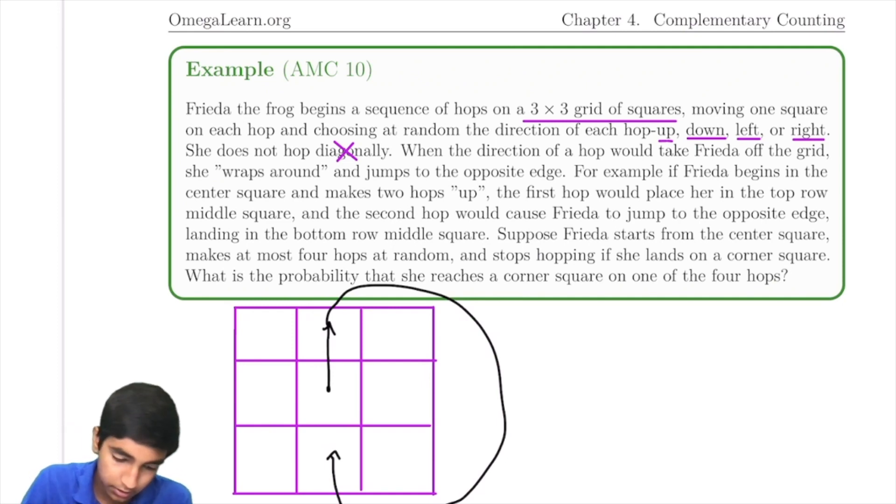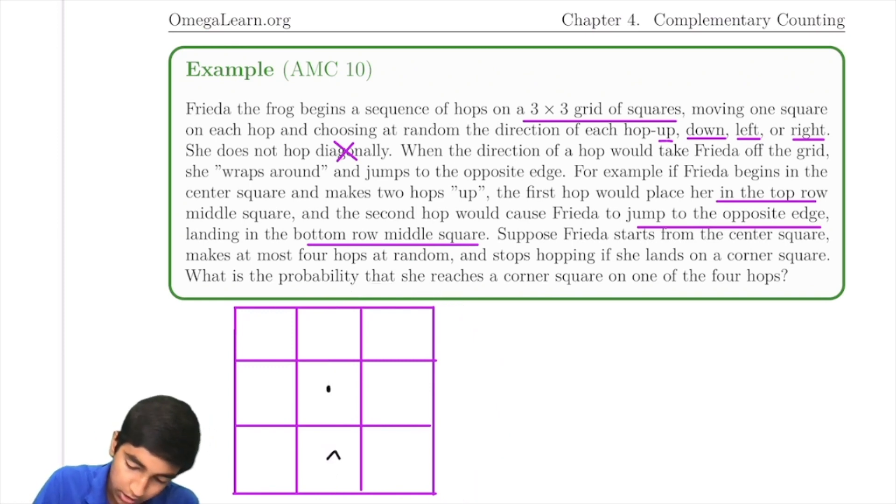So the first hop would place her in the top row, second hop would cause her to jump to the opposite edge, landing in the bottom row, middle square. And suppose Frida starts in the center square, and makes at most four hops, at random.